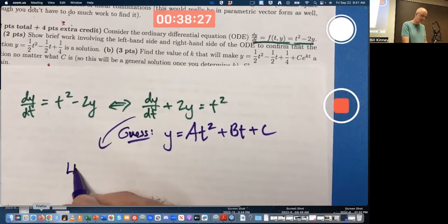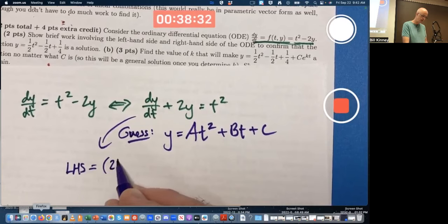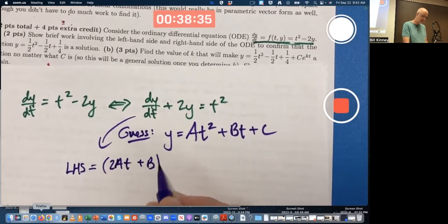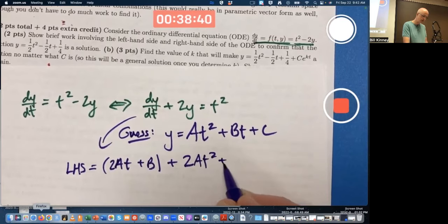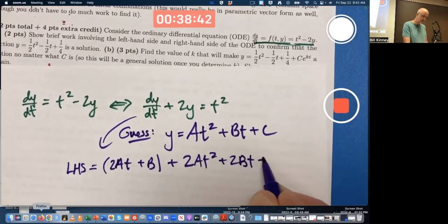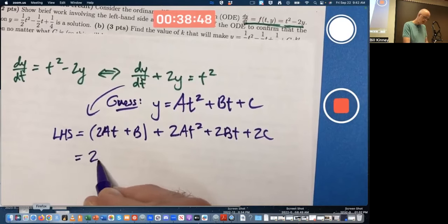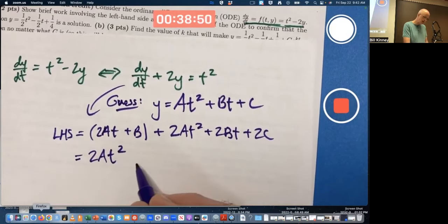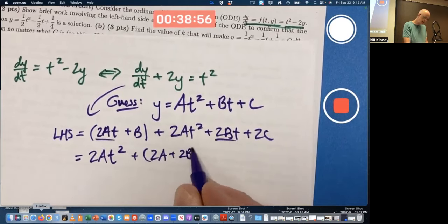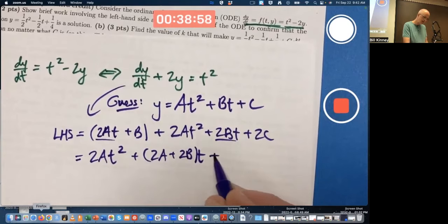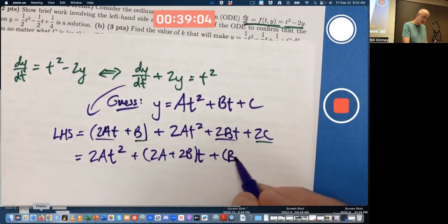So, plug it in the left-hand side. Find its derivative. With respect to t, it'll be 2at plus b. Add two times itself. 2at squared plus 2bt plus 2c. Simplify. The quadratic term is 2at squared. The linear term combines these two. 2a plus 2b times t, and the constant term combines those two, b plus 2c.